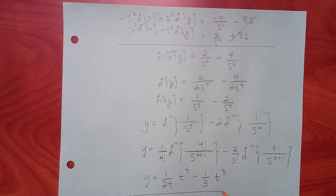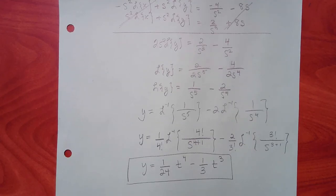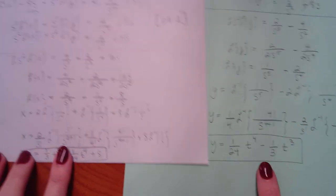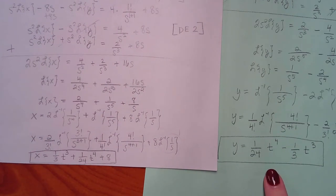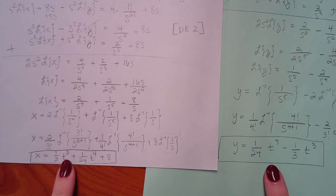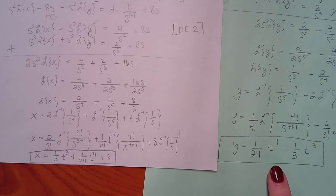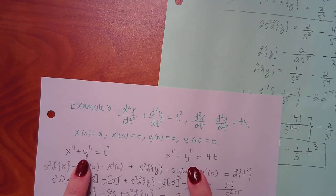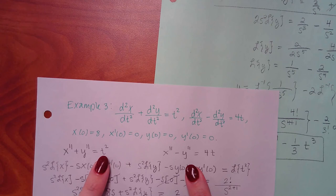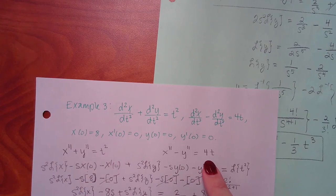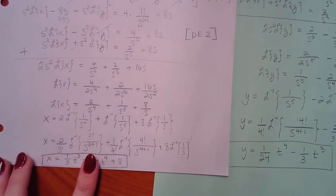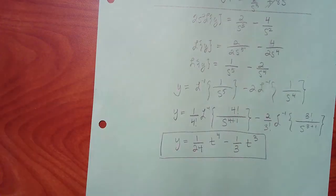Now I have y, and that's the answer to the system. These two functions x(t) and y(t) satisfy the system of equations. If you take the double prime of each and add them you get t squared; if you subtract the double primes you get 4t, which is exactly what the system required. That wraps up this video.